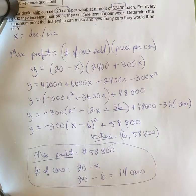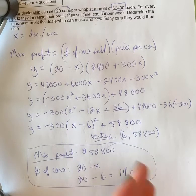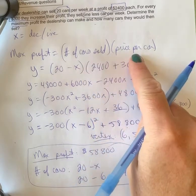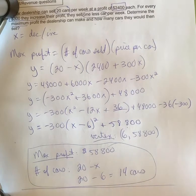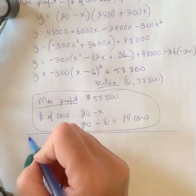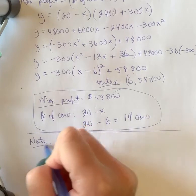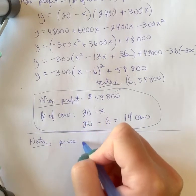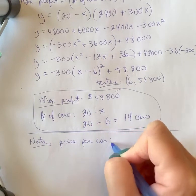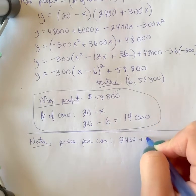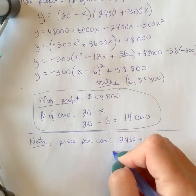Now, I could ask one more question just so you know—there's always three things that could be asked: max profit, number of cars. I could also ask price per car, so I'm just going to make a little note and go down here and say note: price per car would be 2,400 plus 300x. Only answer this if you're asked—you don't want to just write down everything because it's not clear then if you can decipher between them.